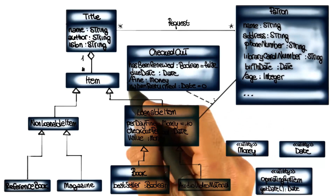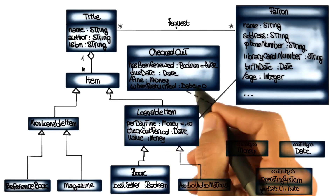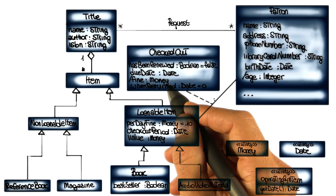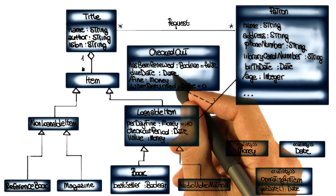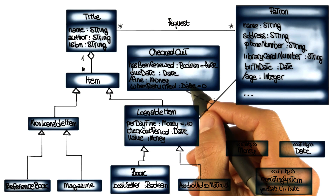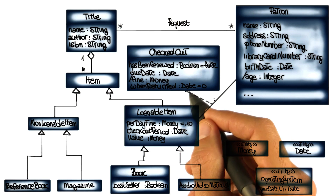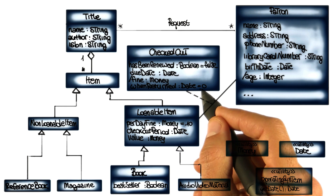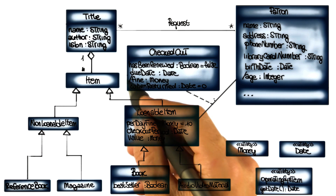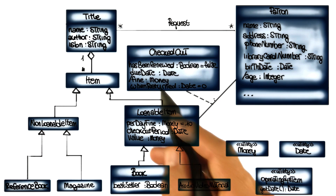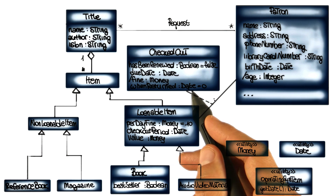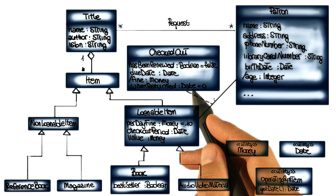Similarly, since you told me that the fine was computed based on the number of days that an item was late — or the patron was late returning the item — I also added this as a derived attribute that is computed based on the due date and when the item is actually returned. Makes sense.